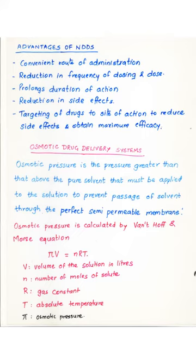The route of administration of this delivery system is very convenient and easy. Most of the osmotic delivery systems are given orally because they act in a manner that the release of drug is controlled. There is a reduction in the frequency of dosing as well as a significant reduction in the dose that needs to be administered. Such systems are designed to release the drug from the interior — that is the core — at a controlled rate, and thus there is prolonging of the duration of action.